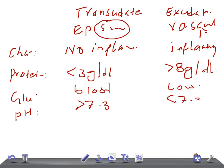For specific gravity: in transudate it is low — less than 1.015 — because it is a filtrate. In exudate, specific gravity is more than 1.018.